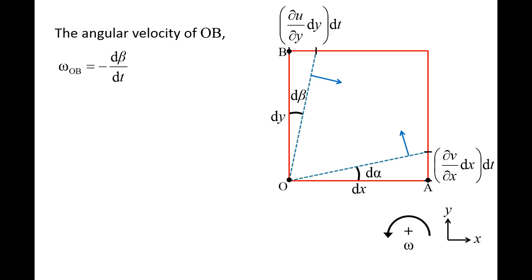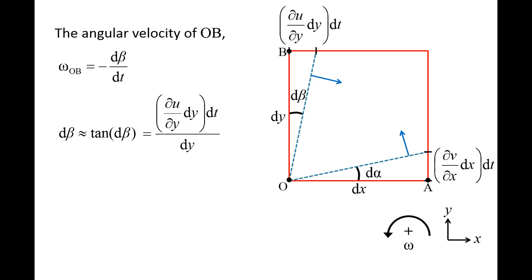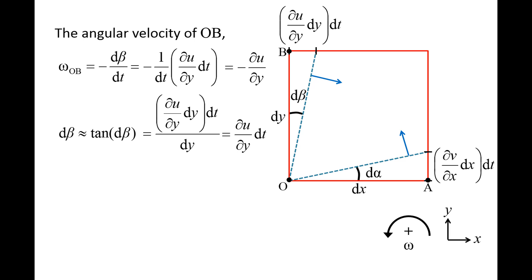Now we examine the angular velocity of side OB, which is the negative time rate of change of angle d beta. We require a negative sign because side OB is rotating in the clockwise direction, which is the negative direction for angular velocity. Since d beta is very small, it is approximately equal to the tangent of d beta. The tangent of d beta equals partial u partial y dy dt divided by dy. After canceling the dy's, we obtain partial u partial y dt. Plugging in this expression and canceling the dt's, omega OB is equal to negative partial u partial y.